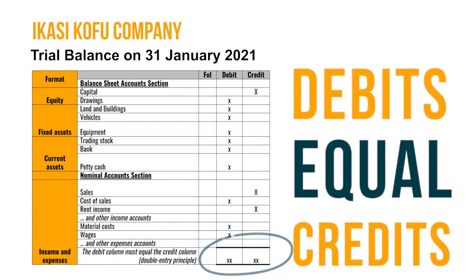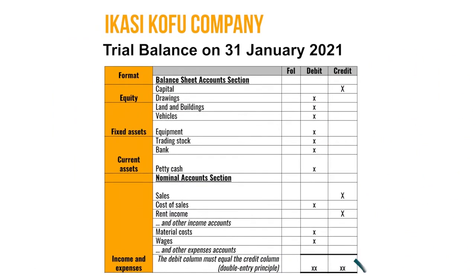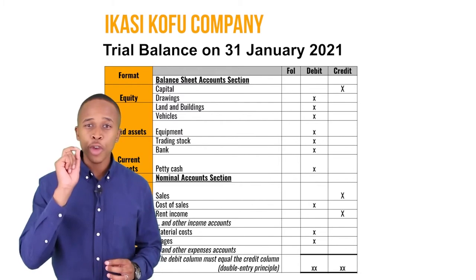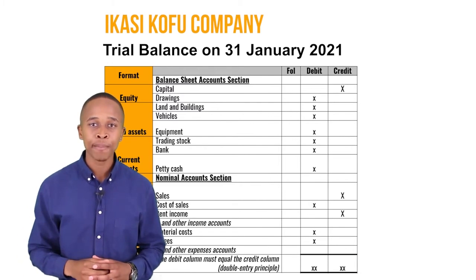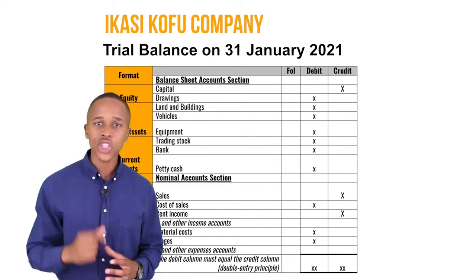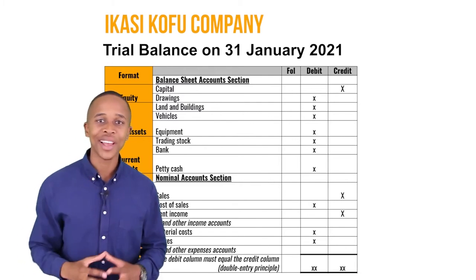The trial balance balances when the totals agree — the double entry principle is applied, meaning the debits equal the credits. If the debit equals the credit, there is no error. Grade 9s, if this is your first time going through the trial balance, let's look at this section one more time.